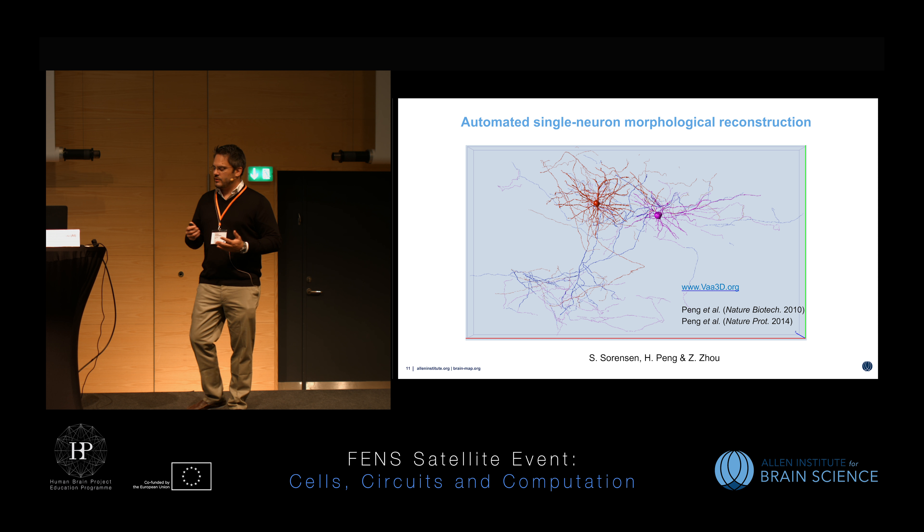At the Institute, we are developing a whole host of different models. Some are more abstract — leaky integrate-and-fire or generalized g-lift models, from Stefan Michalis' group on the left. On the right are the biophysically detailed models. People working at the HPP, with Henry's team, or on the Blue Brain Project will recognize these models and the kind of power they can offer.